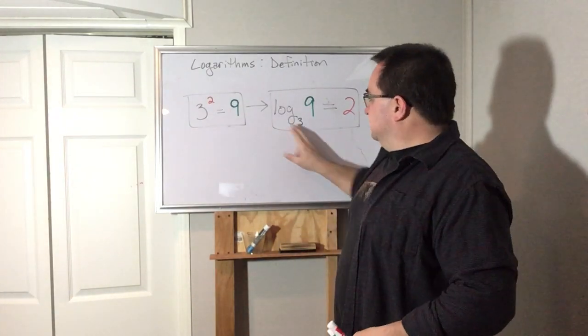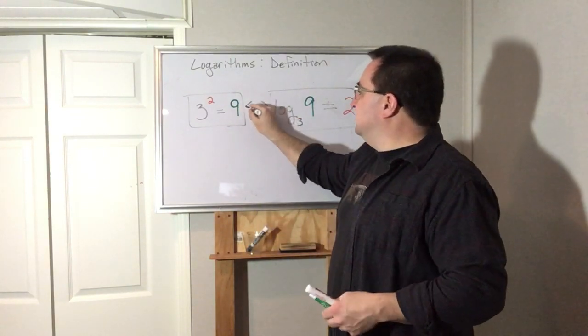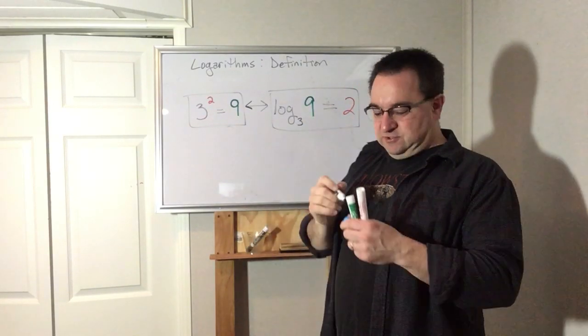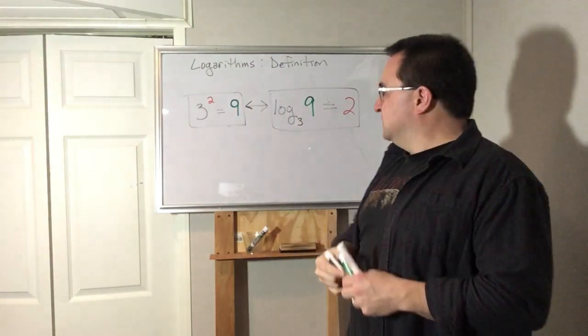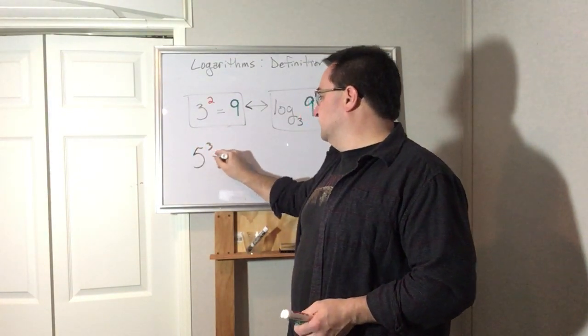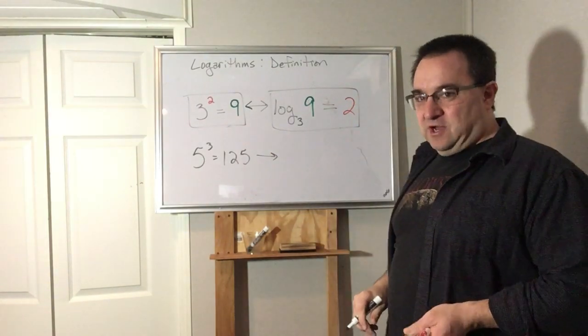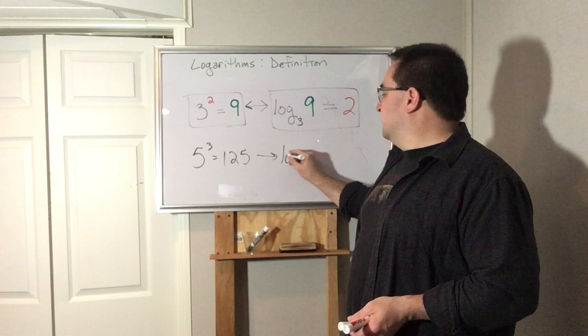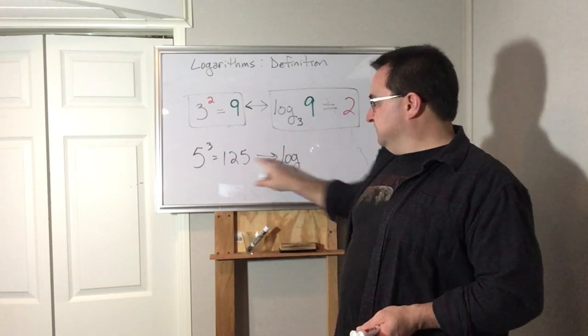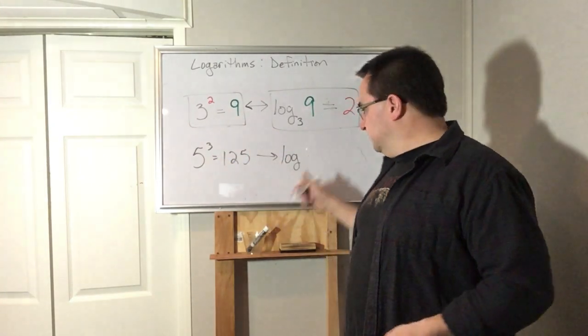What you've got to get used to is how to put things in their places. One of the jobs that we need to do is rewrite it. You've got to be able to take an exponential and write it as a log, and a log and write it as an exponential. Let's do another example. Let's say I have 5 to the third is 125. How would I rewrite that as a logarithm? Let's look at the pattern.